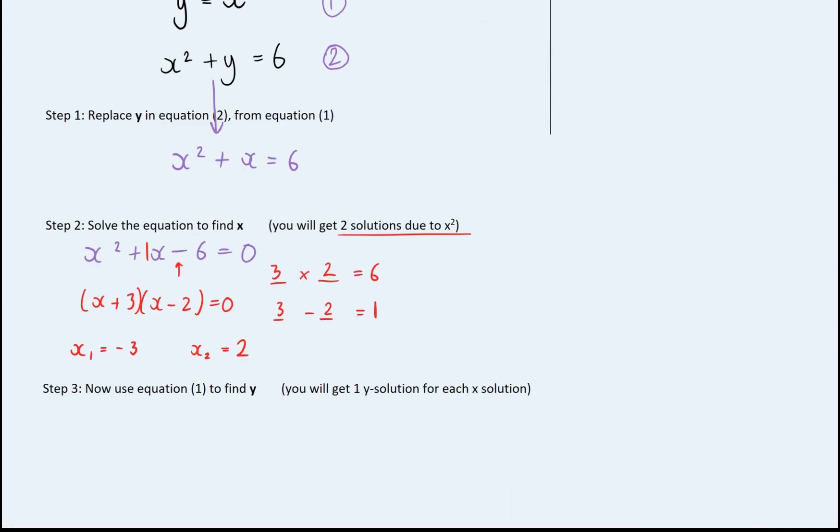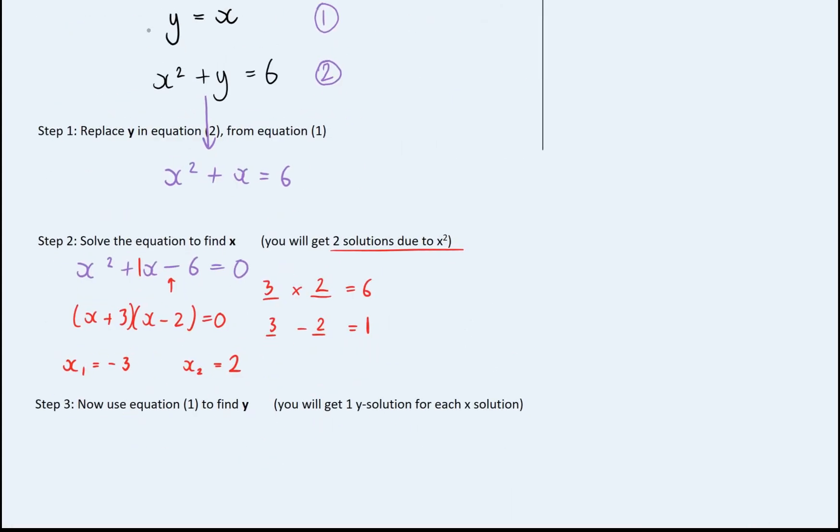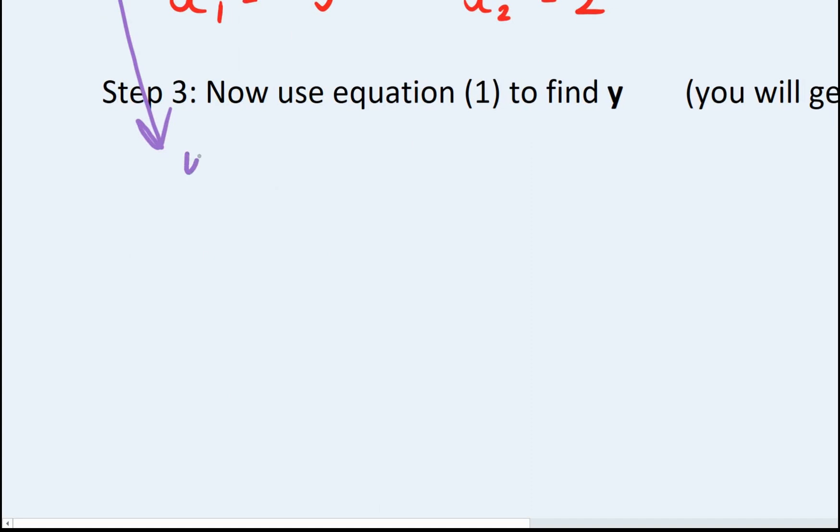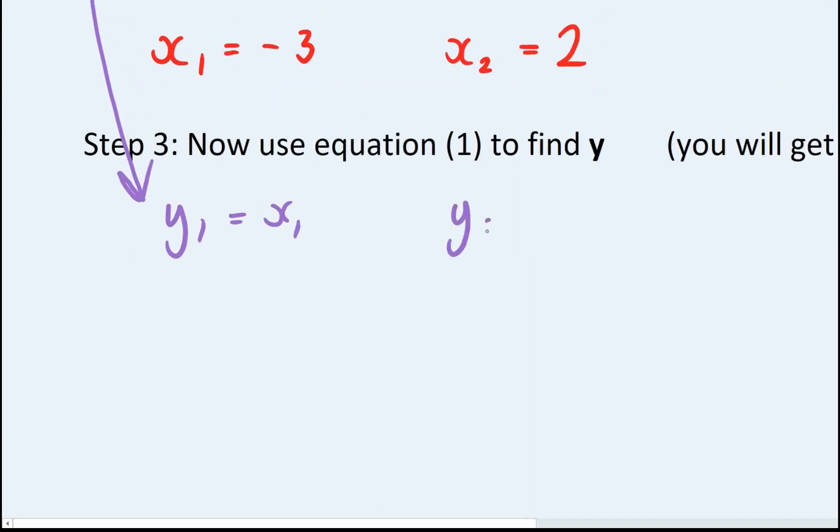So right back to the start, we saw that y equals x, so that means y1 will equal x1, and y2 will equal x2. This one's fairly straightforward. y1 is going to be minus three, and y2 is going to be two. And therefore, we've solved.